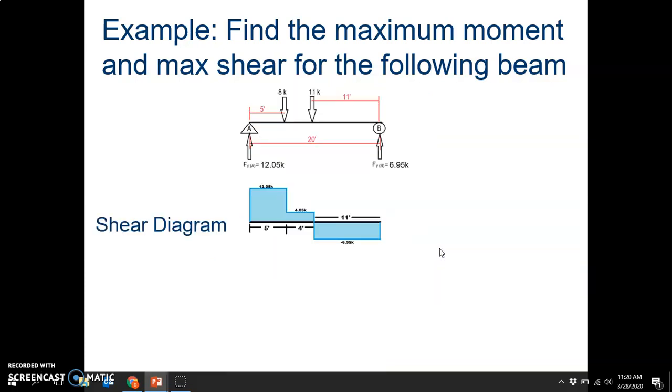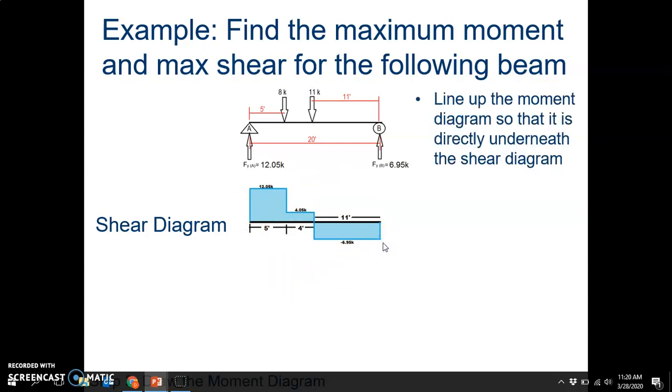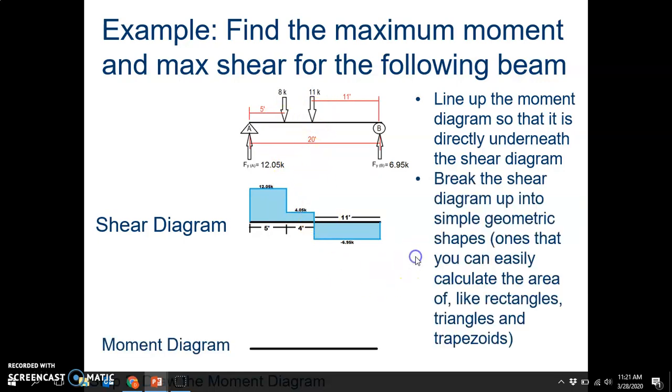Now we are going to draw the moment diagram. Remember, the moment is going to be the area underneath the curve. We will first line up the moment diagram so it is directly underneath the shear diagram. You want everything to be lined up, since that will help make it a lot easier when you're realizing what's contributing to what. Next we are going to break up the shear diagram into simple geometric shapes, ones that you can easily calculate the area of. That is going to be rectangles, triangles, and trapezoids.